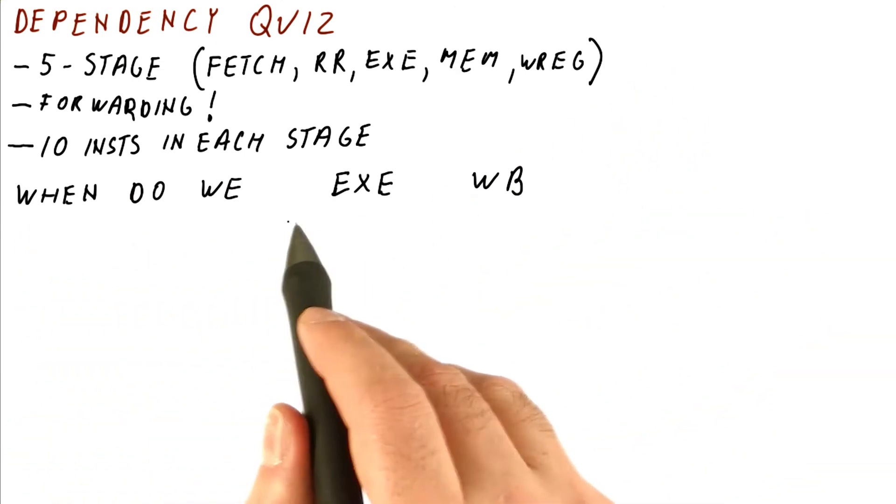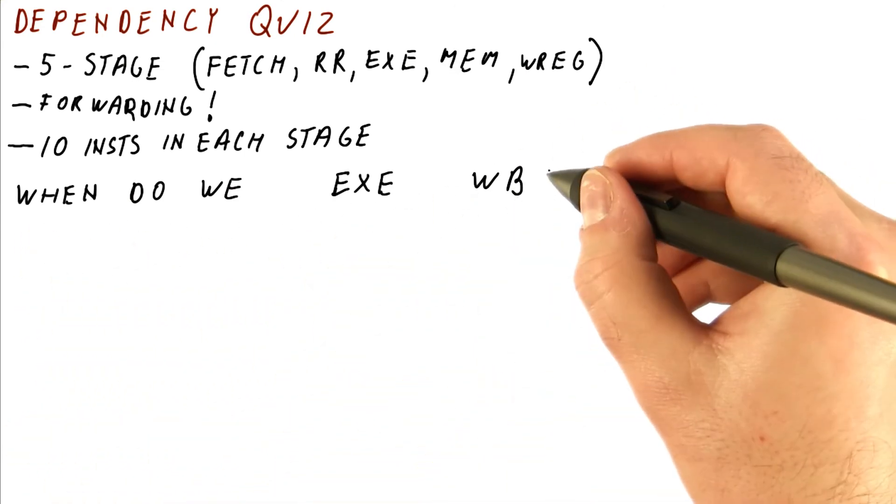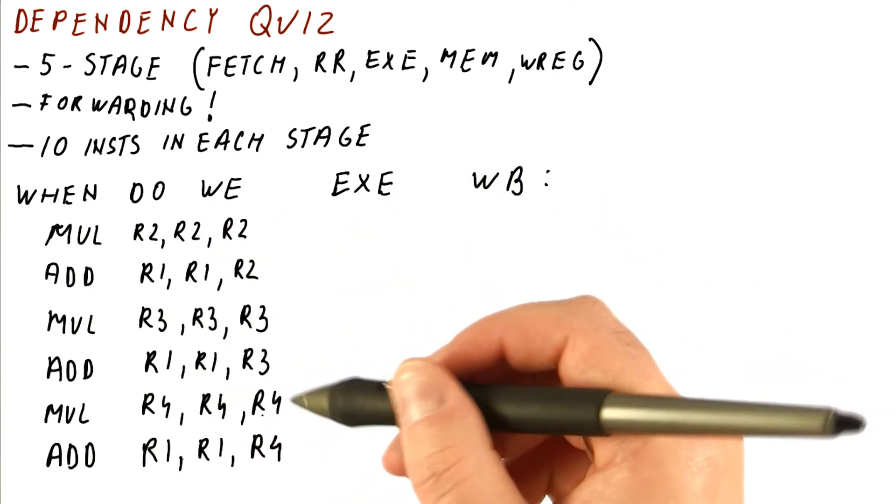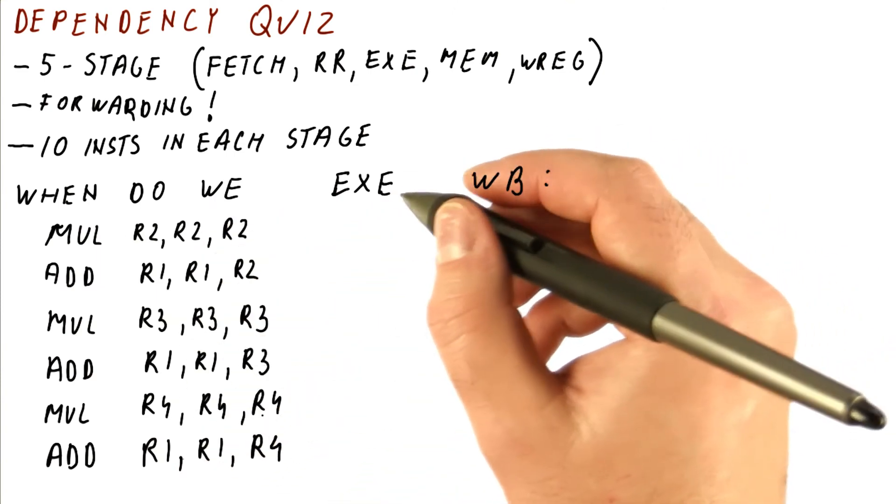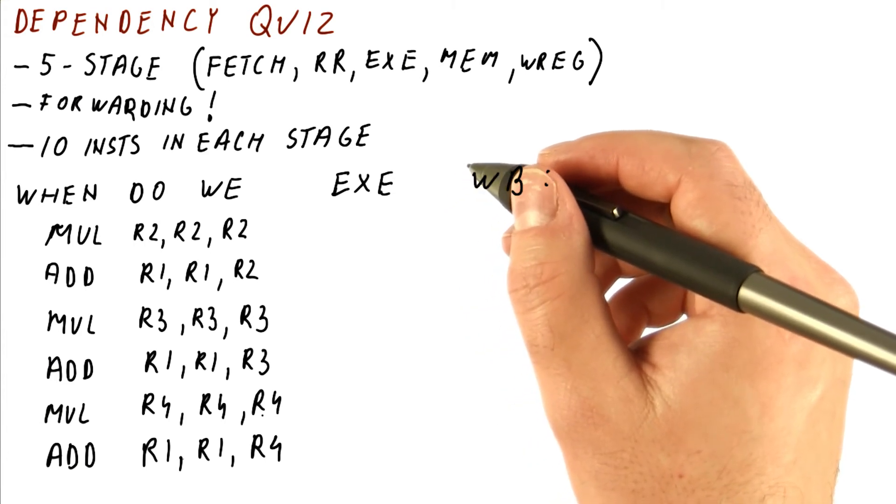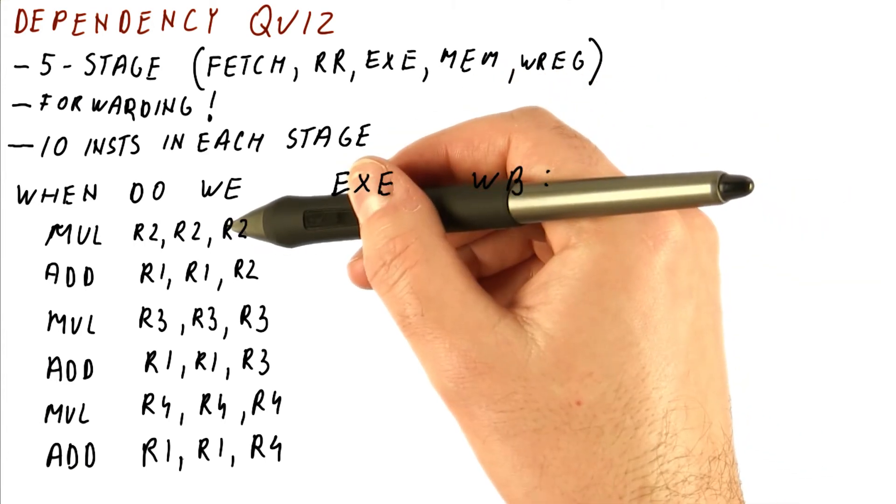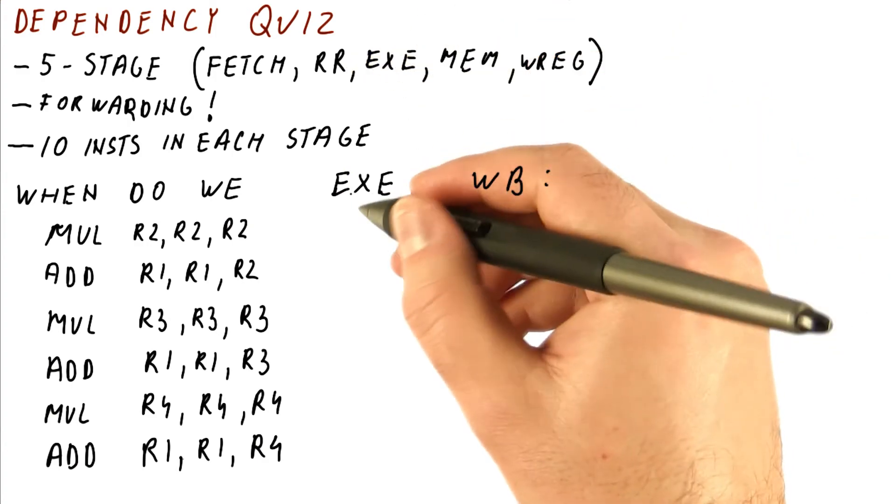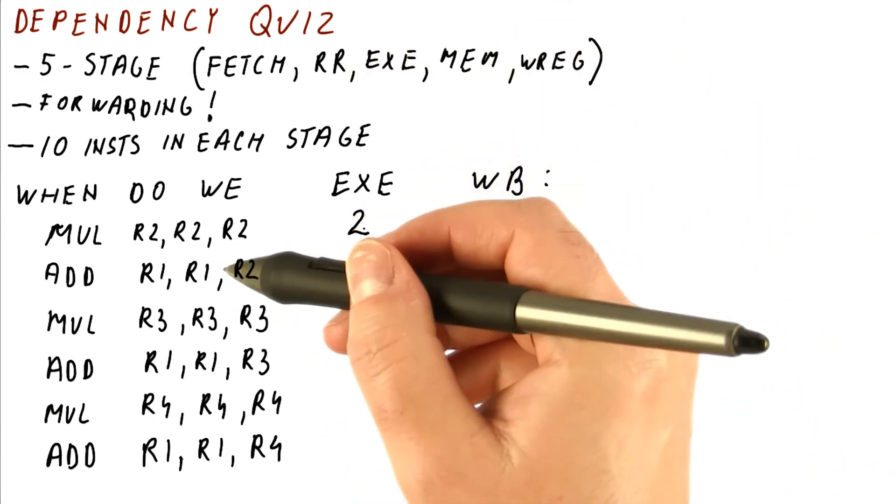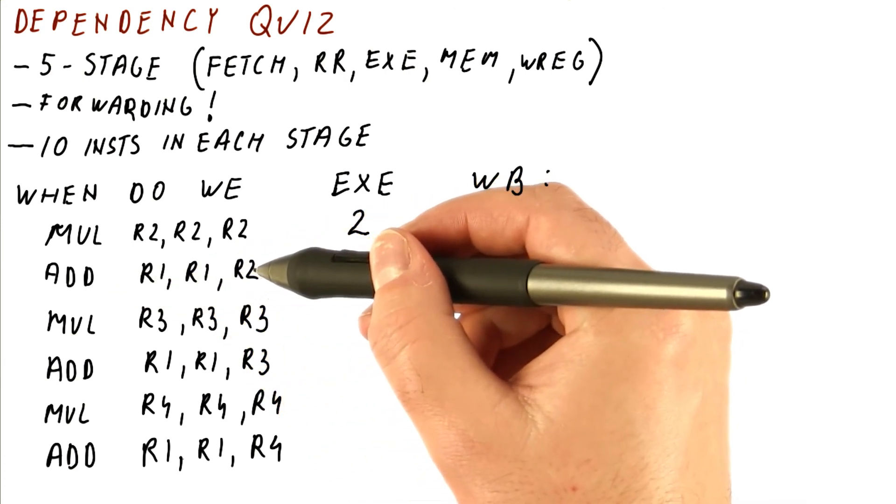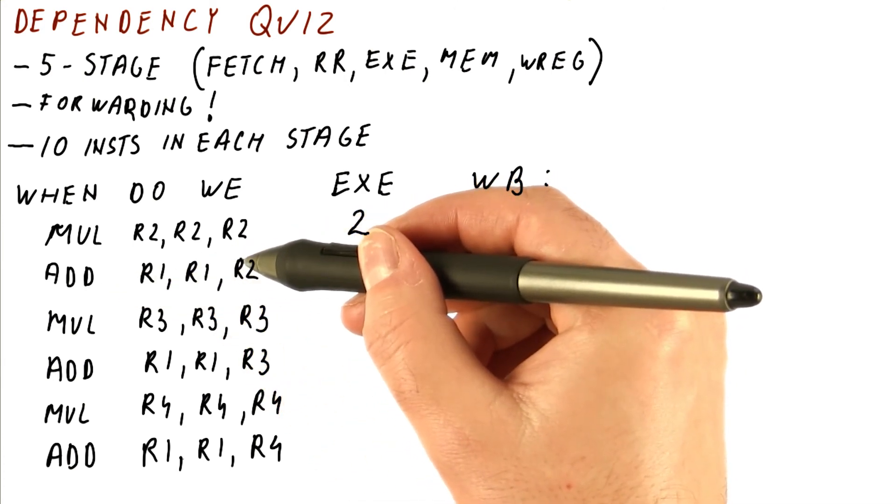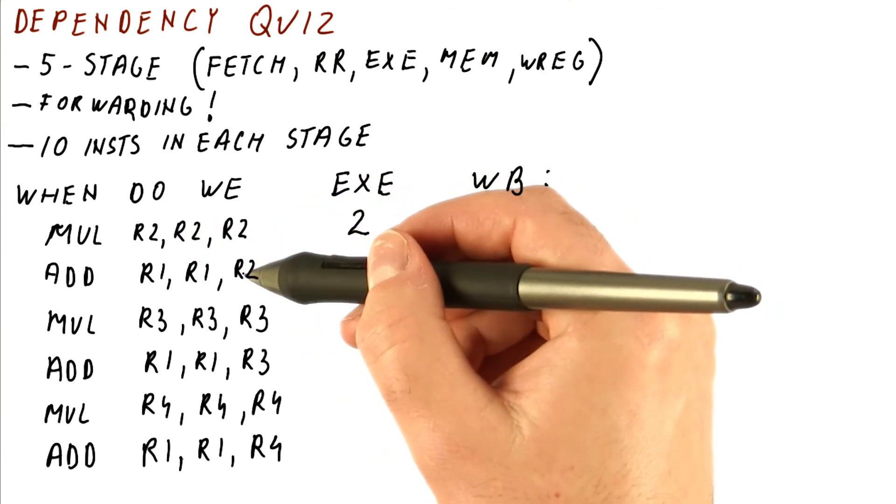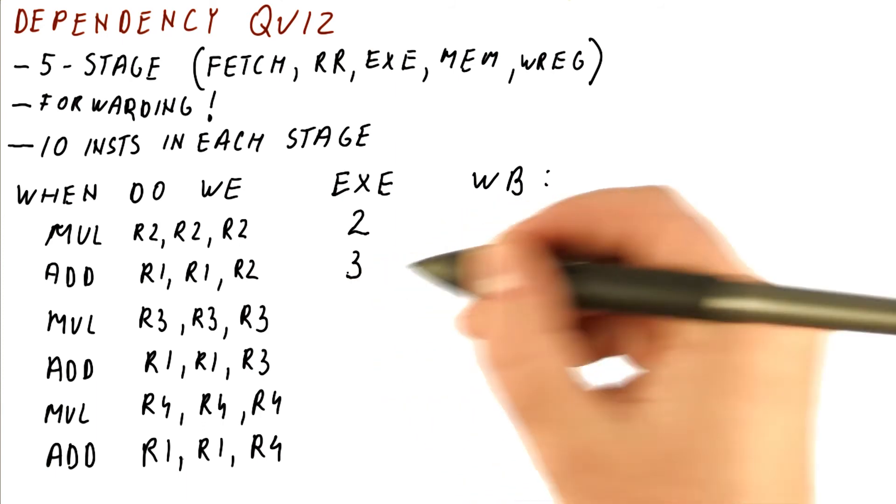The question is, when do we execute and write back each of these instructions? So we have these six instructions, and the question is, when do we execute? And to help you get started, let's say that the very first cycle is cycle zero. So that is when we fetch them all. They read registers in cycle one, so they will execute definitely in cycle two. Also, because the ADD here is using R2, it has to wait for the MUL to execute, and then forwarding will produce the MUL's value to the ADD. So the ADD has to wait and execute in cycle three.